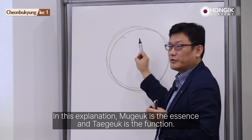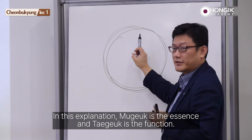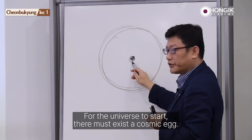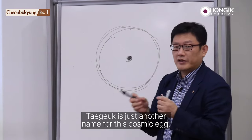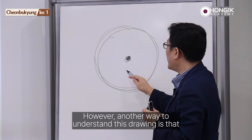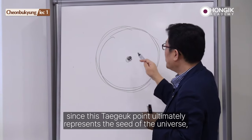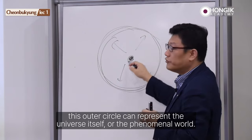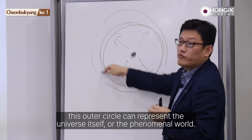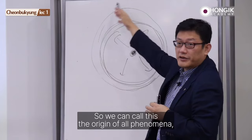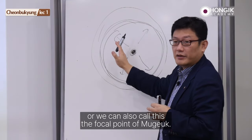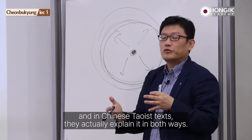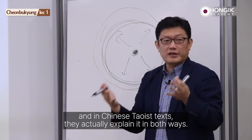In this explanation, Mugok is the essence, and Taeguk is the function. For the universe to start, there must exist a cosmic egg. Taeguk is just another name for this cosmic egg. However, another way to understand this drawing is that since this Taeguk point ultimately represents the seed of the universe, this outer circle can represent the universe itself, or the phenomenal world. So we can call this the origin of all phenomena, or we can also call this the focal point of Mugok. Both explanations are possible, and in Chinese Taoist texts, they actually explain it in both ways.